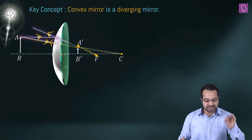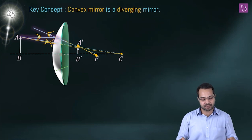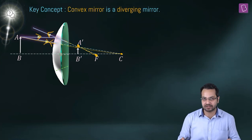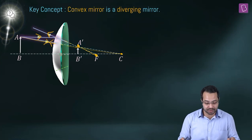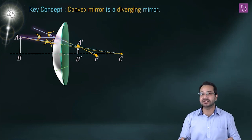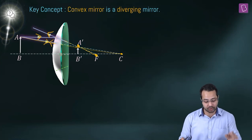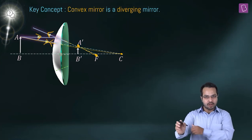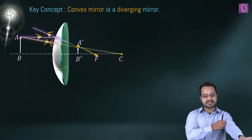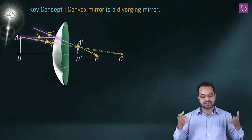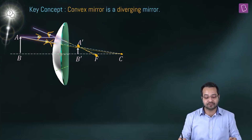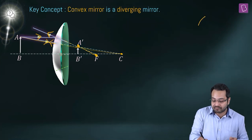The nature of the image is: erect, virtual, and diminished. The key concept is that a convex mirror is a diverging mirror, so no matter where the object is placed, the rays always diverge after reflection.